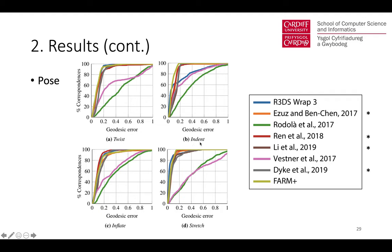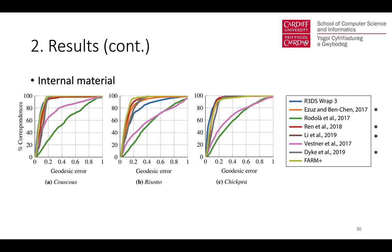Regarding internal material, most methods that perform well rely on NICP initial correspondences, or like R3DS-RAP use an ICP-based nearest-neighbor correspondence. Due to local perturbation of geometry, computing correspondences using typical handcrafted feature descriptors leads to poor results.